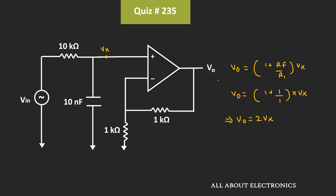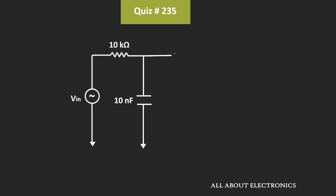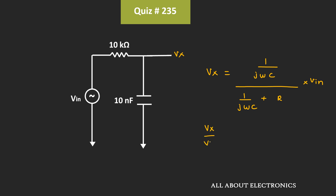Similarly, let's find out the relationship between Vin and Vx. Vx is the output of this low pass filter. By applying the voltage divider rule, Vx = [1/(jωC)] / [1/(jωC) + R] × Vin. That means Vx/Vin = 1 / (1 + jωRC). This is the relationship between Vx and Vin.